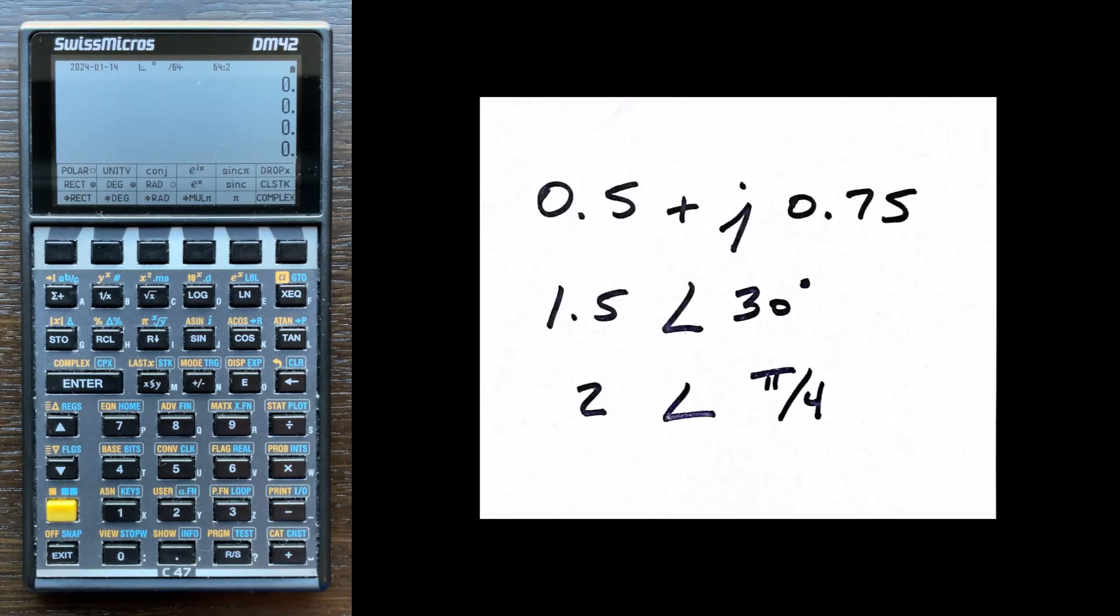All right, so this is the next video where we're going to use the C47 calculator to do some complex number calculations. I've preset the flags that I like to use with respect to how complex numbers are displayed. I created this custom menu which I like, so if I just press the yellow button three times, it comes back to the custom menu.